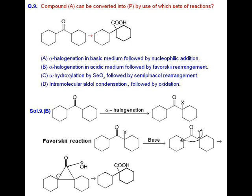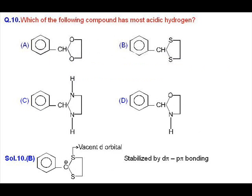the ring will open and we will get the desired product. Question number 10. Where we will have to find out the most acidic hydrogen? We consider option B.